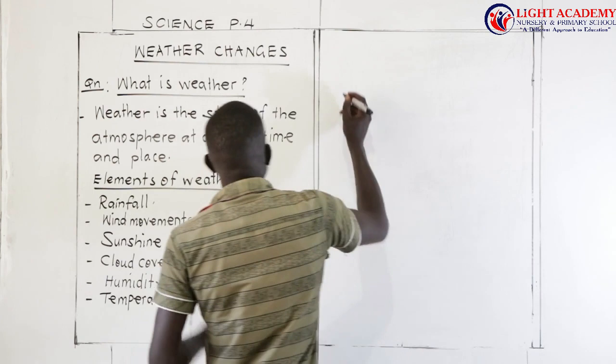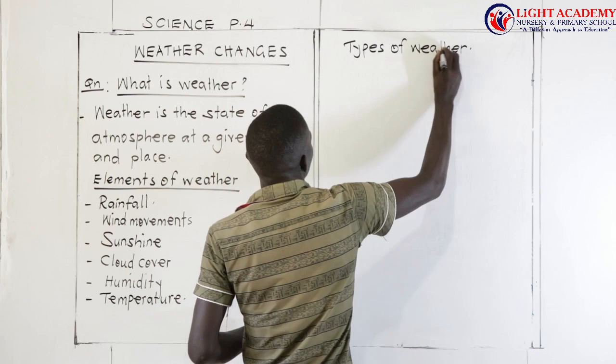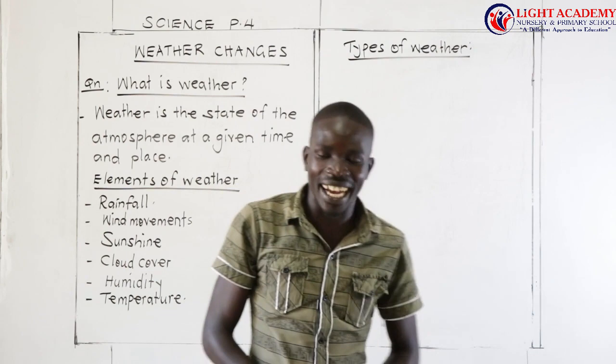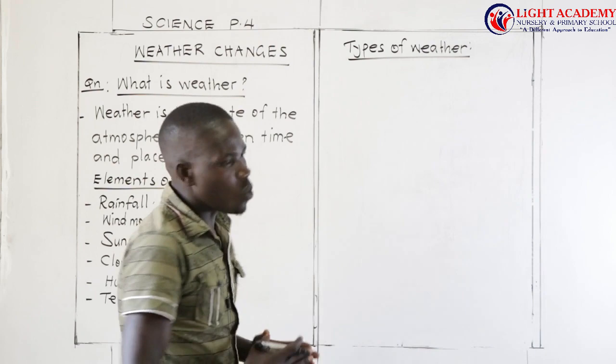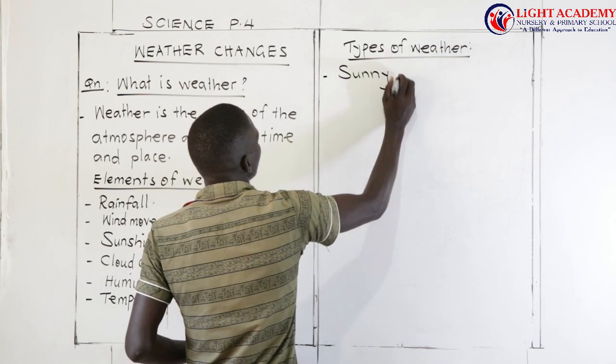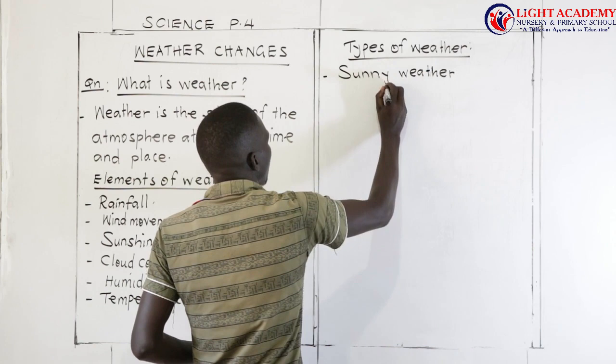Now let us look at the types of weather. We have looked at the elements of weather, so now we look at types. One of the major types of weather is what we call sunny weather.